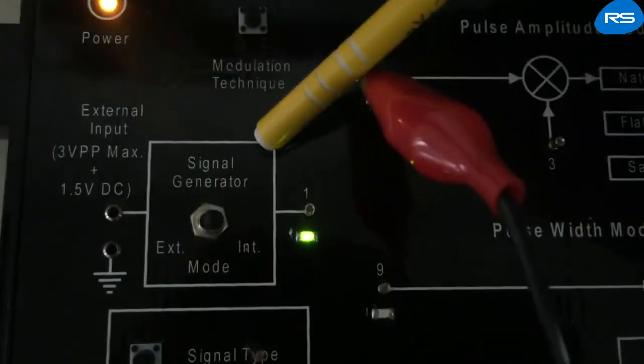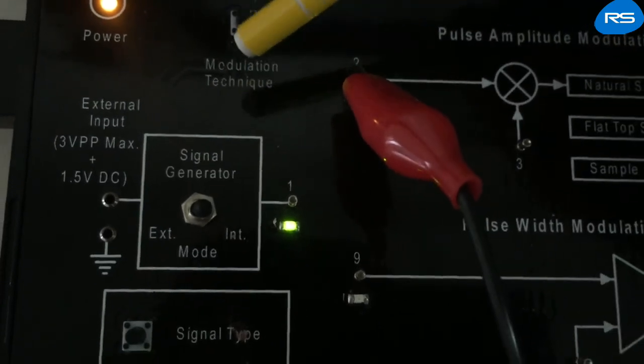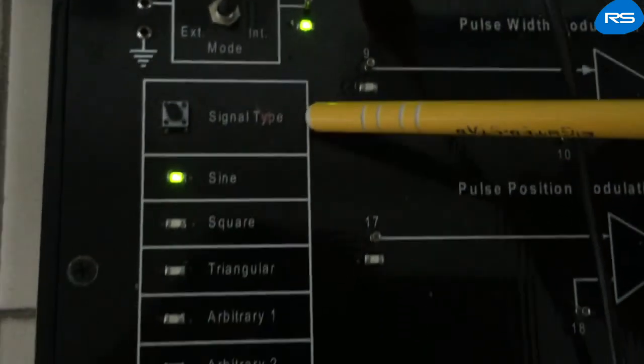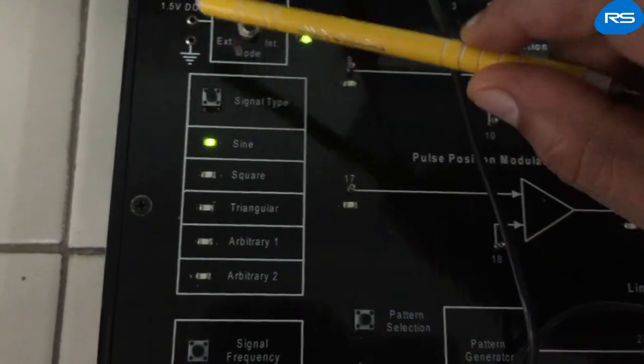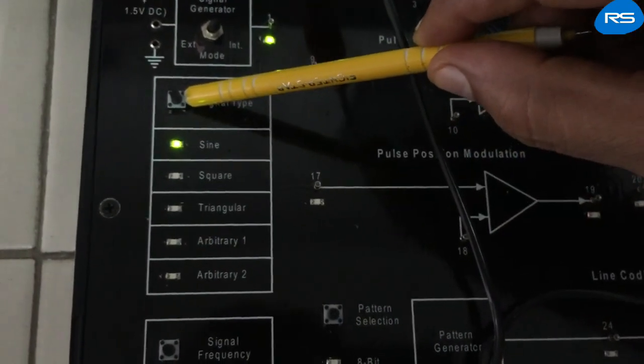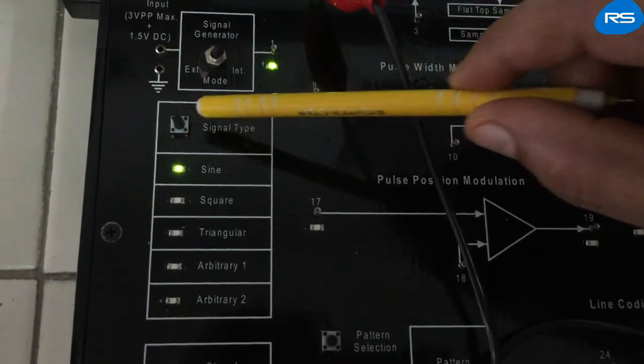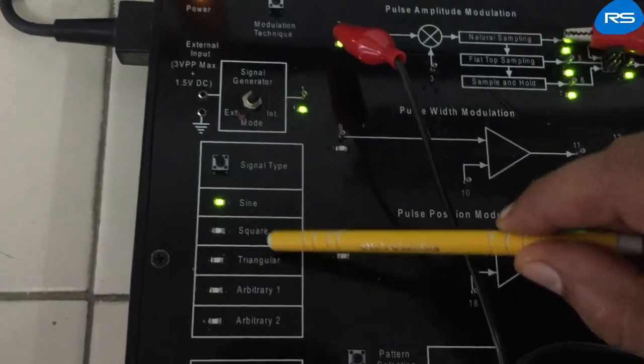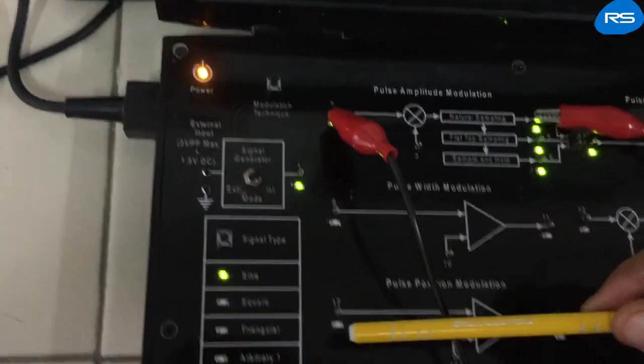From here, we can have a signal, message signal, whose signal type can be sorted with the help of this selector node. It can be sine wave, square wave, triangular wave or any arbitrary wave.